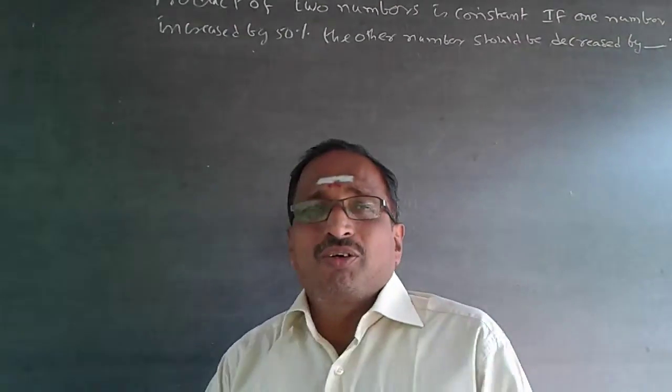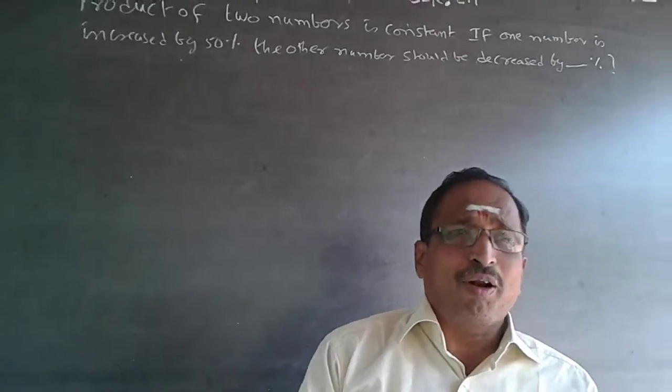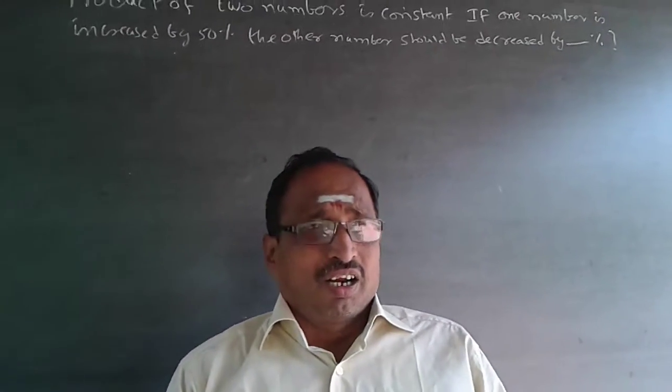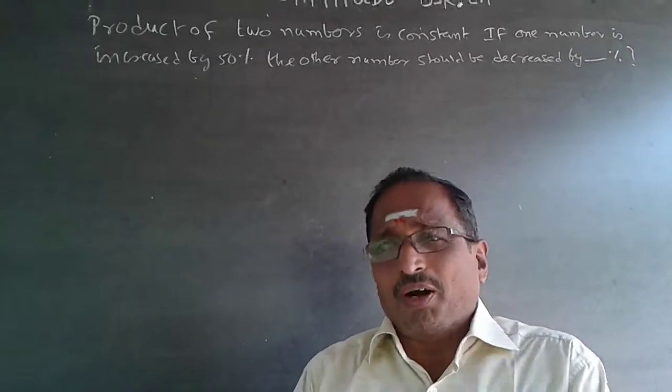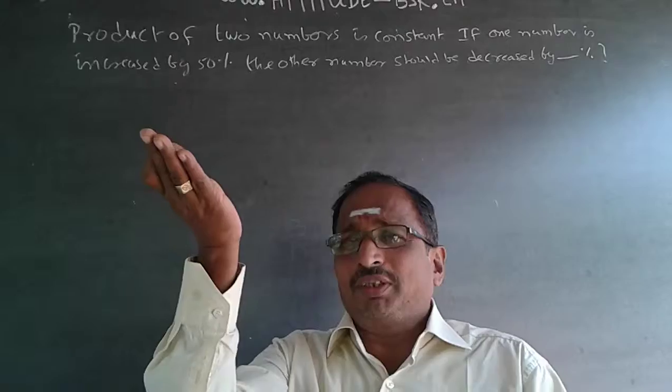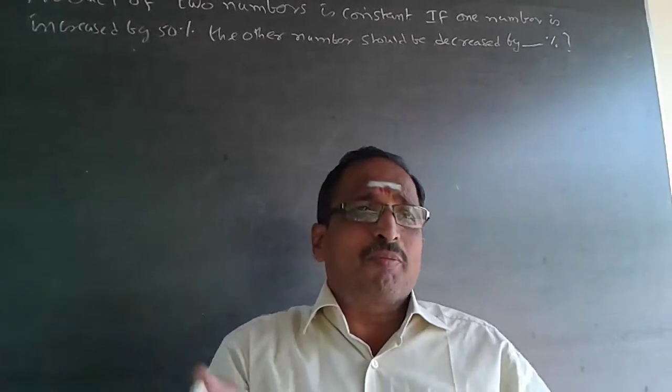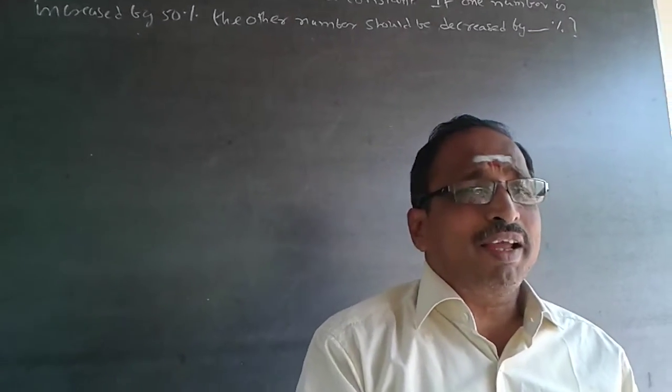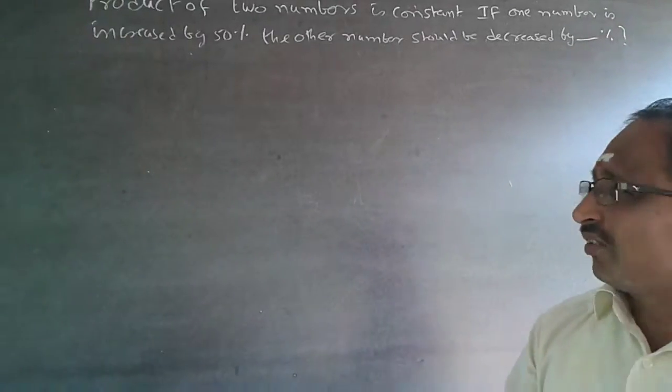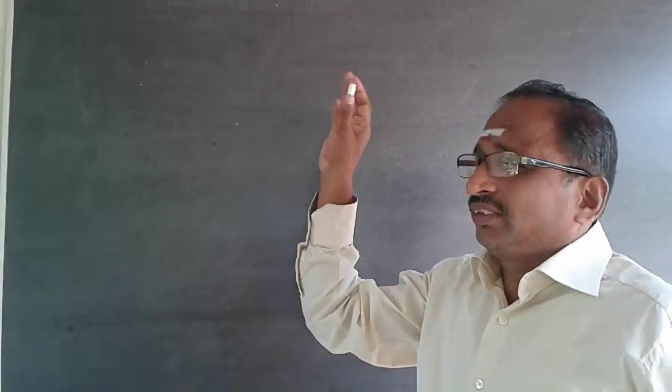It's a very simple question on percentages. What it says is there are two numbers, the product is constant. If one is increased by 50%, the other number should be decreased by what percentage?